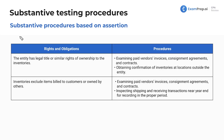Next up, rights and obligations. We're concerned about the entity having legal right or similar rights of ownership to the inventories it actually lists. We are going to examine paid vendors' invoices, consignment agreements, and contracts to make sure you actually legally have the right to the inventory — it doesn't belong to someone else, you're not holding it for someone else, you actually purchased it. You also want to obtain confirmation of inventories at locations outside the entity. Multiple procedures can work for multiple assertions.